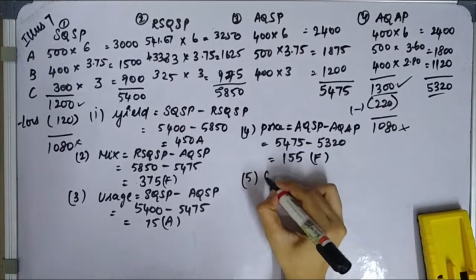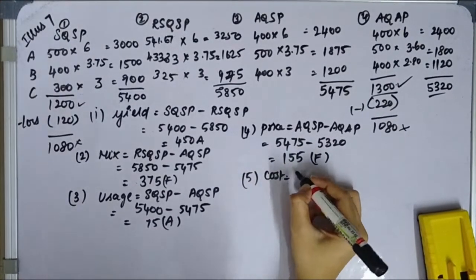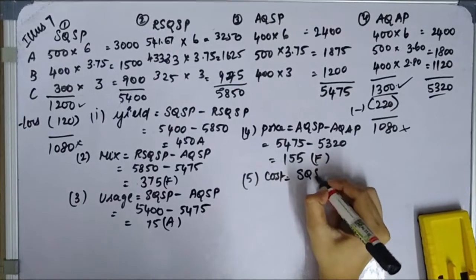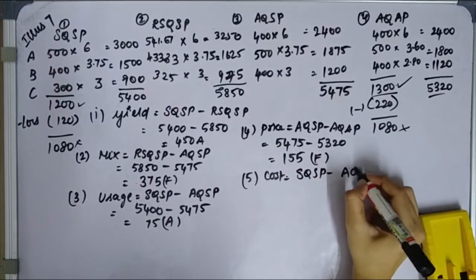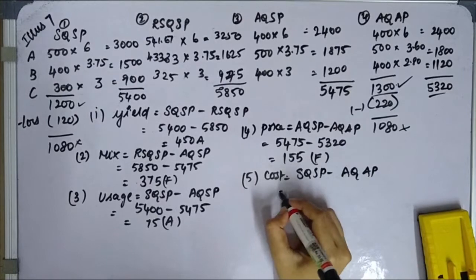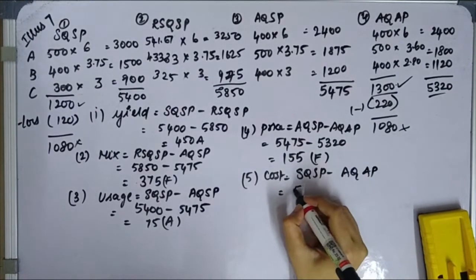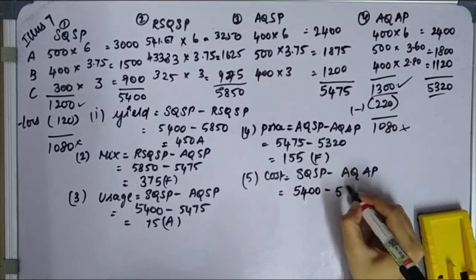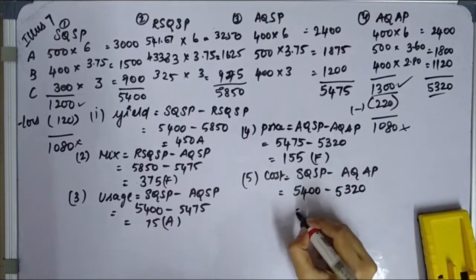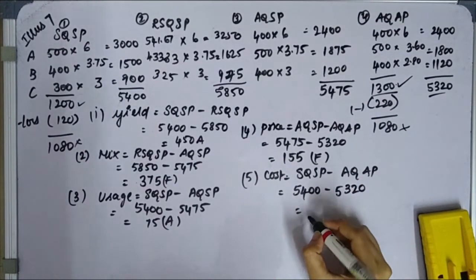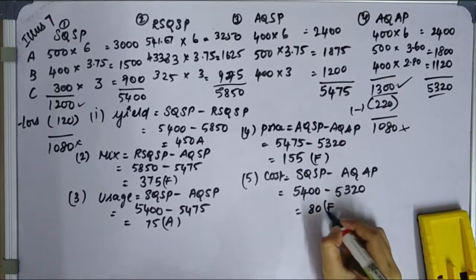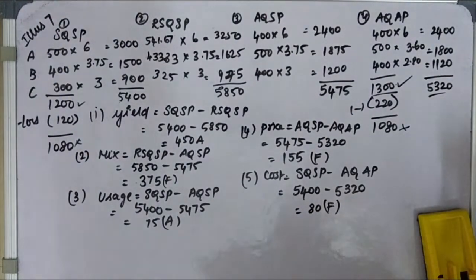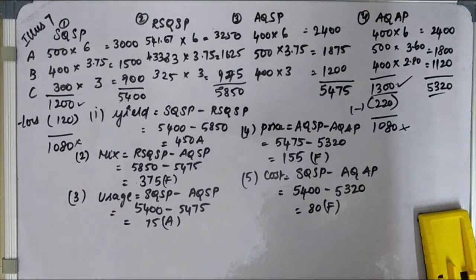And last one, Cost, Material Cost Variance. Material Cost Variance formula is SQ SP minus AQ AP. SQ SP is 5,400 minus AQ AP is 5,320. So 80 rupees as favorable. That's it. Illustration number 7 is over. Take care.